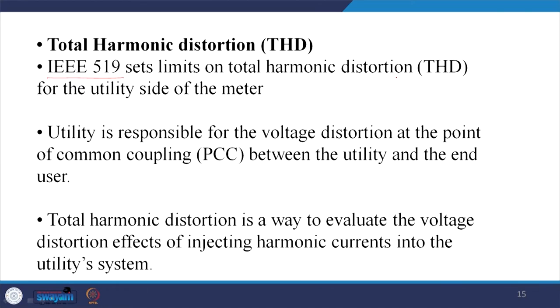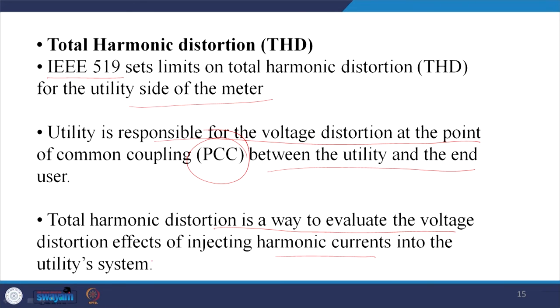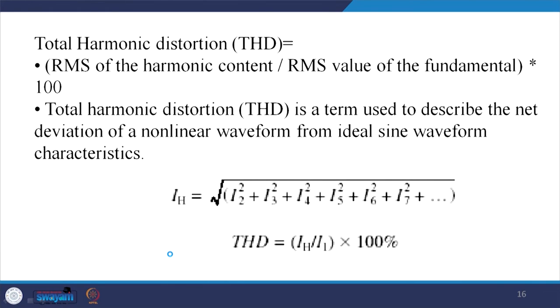According to IEEE 519, the total harmonic distortion limit on the utility side of the meter is generally restricted to 5 percent. The utility is responsible for voltage distortion at the point of common coupling — PCC — between the utility and the user. THD is a way to evaluate the voltage distortion effect of injecting harmonic current into the utility system. The cause is the non-linear load: the voltage may be sinusoidal but the current has distortion. THD of the RMS harmonic current is expressed as the RMS of harmonic components (excluding fundamental) divided by the RMS fundamental value, times 100 percent.